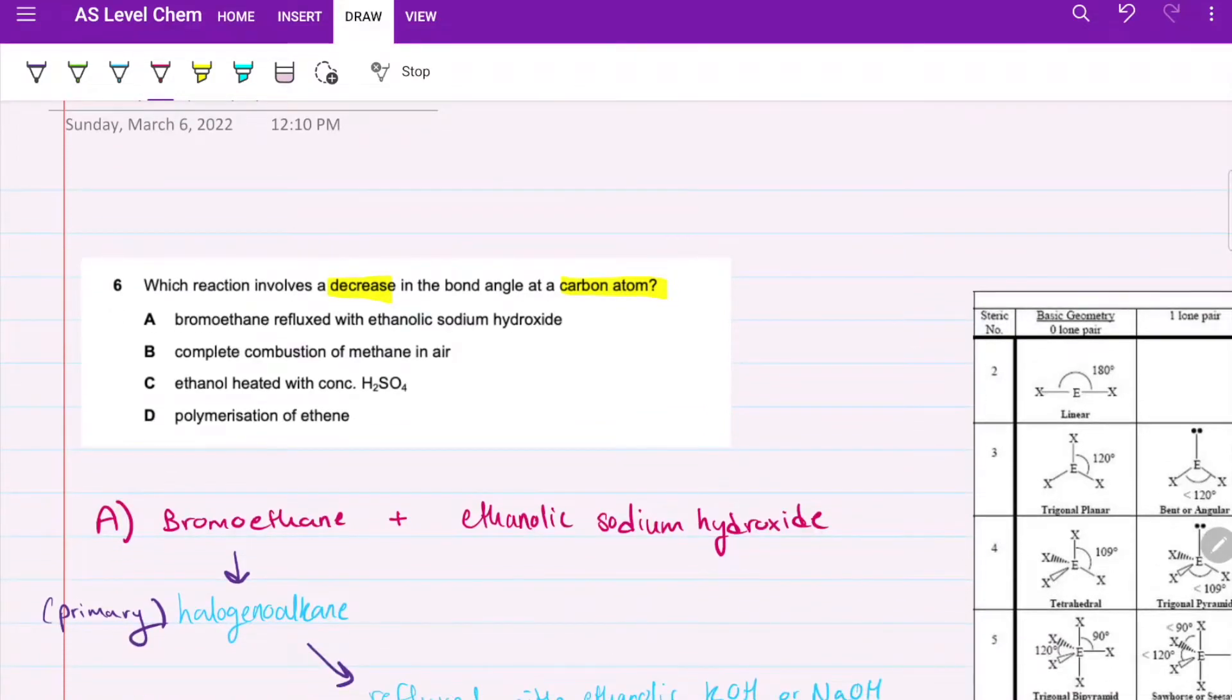So for question 6, which reaction involves a decrease in the bond angle at a carbon atom. Decrease, it's pretty important. What I thought we'd do is an elimination process. I'll take you through the four options and explain why each is either correct or wrong.